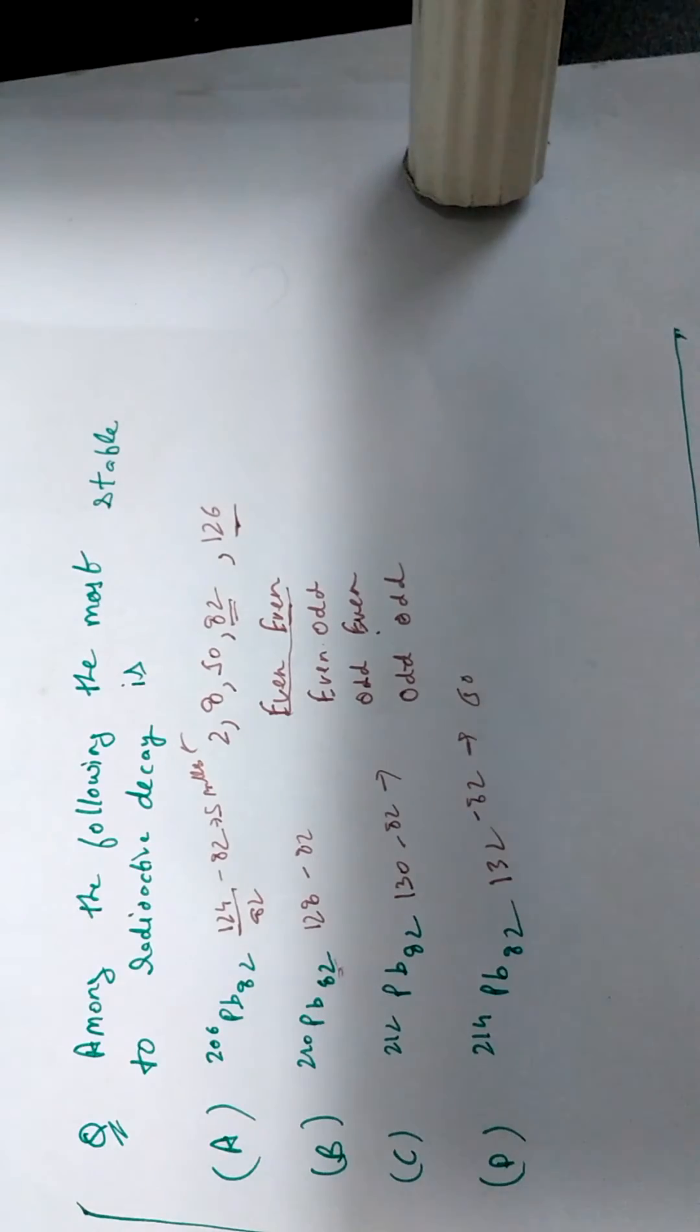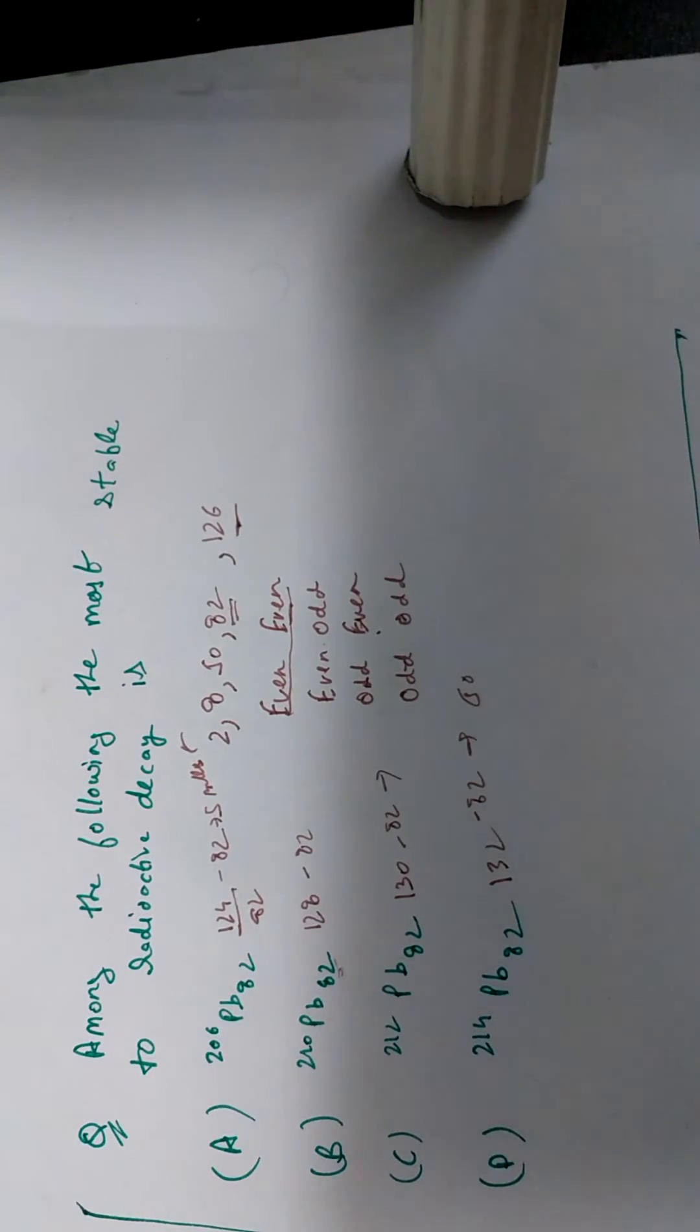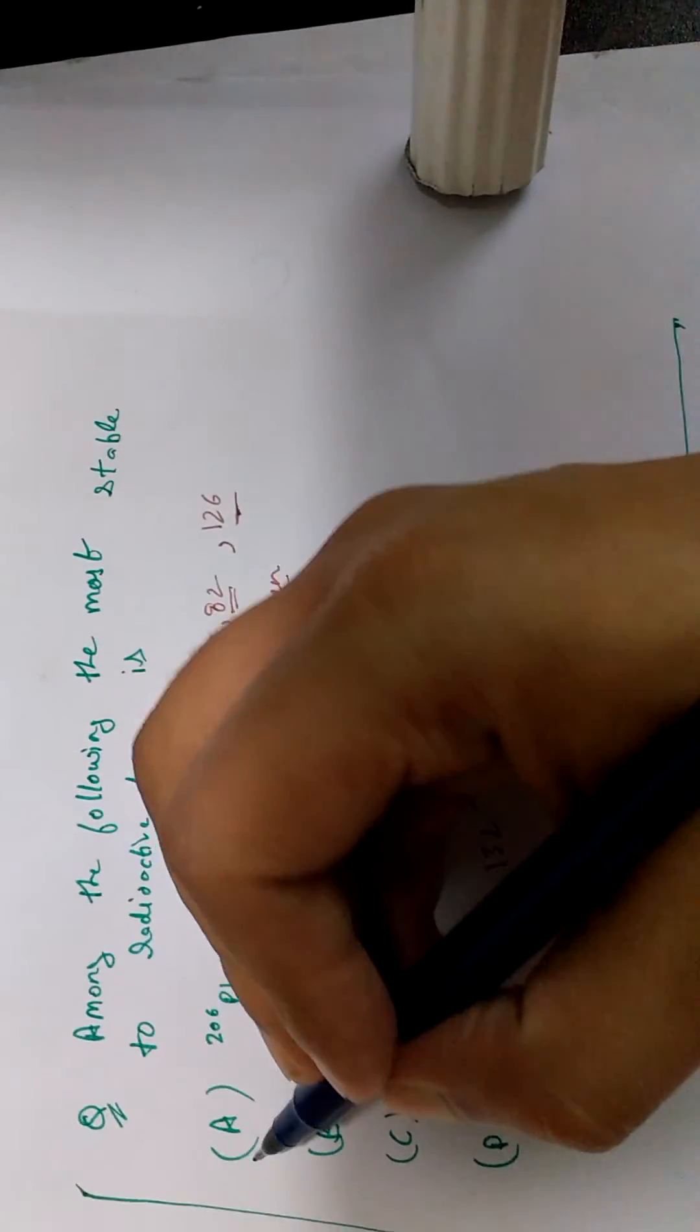So the smaller the difference between the number of neutrons and the number of protons, the more stable the nuclei towards radioactive decay. So the answer is A.